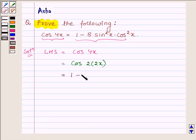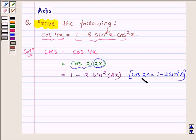1 minus 2 sin square 2x. Since cos 2a is equal to 1 minus 2 sin square a, and here in place of a we have 2x. So in applying this identity, which is Identity 14 of your book, we get 1 minus 2 sin square 2x.